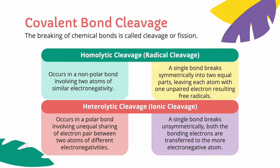The breaking of chemical bonds is called cleavage or fission. There are two types of cleavage: homolytic cleavage, also known as radical cleavage, and heterolytic cleavage, also known as ionic cleavage.